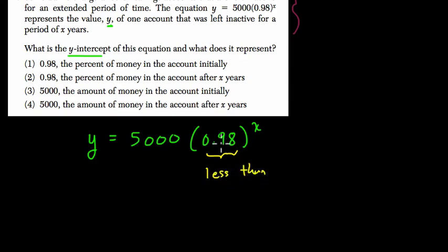Because it's 0.98, that's 98% of our value, we're losing 2% each year. So this is a decay function where we lose 2% of our total each year.